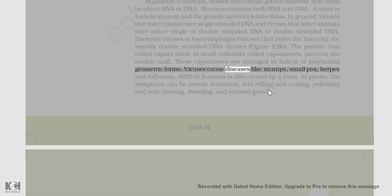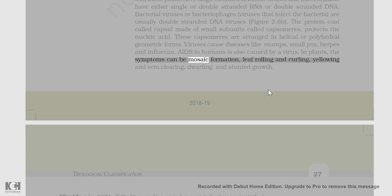Viruses cause diseases like mumps, smallpox, herpes, and influenza. AIDS in humans is also caused by a virus. In plants, the symptoms can be mosaic formation, leaf rolling and curling, yellowing and vein clearing, and dwarfing and stunted growth.